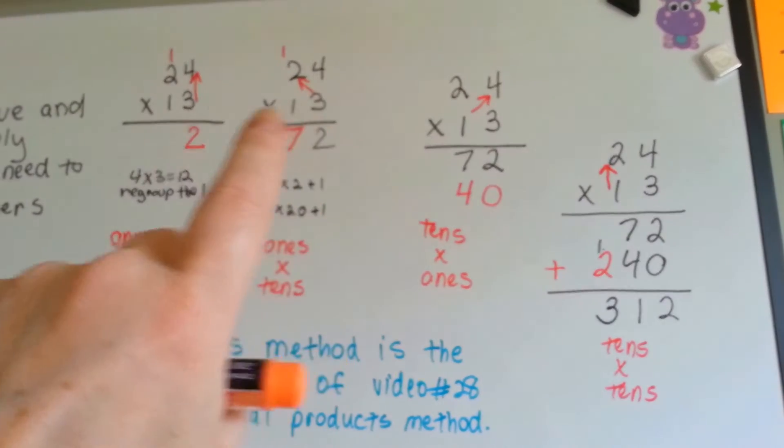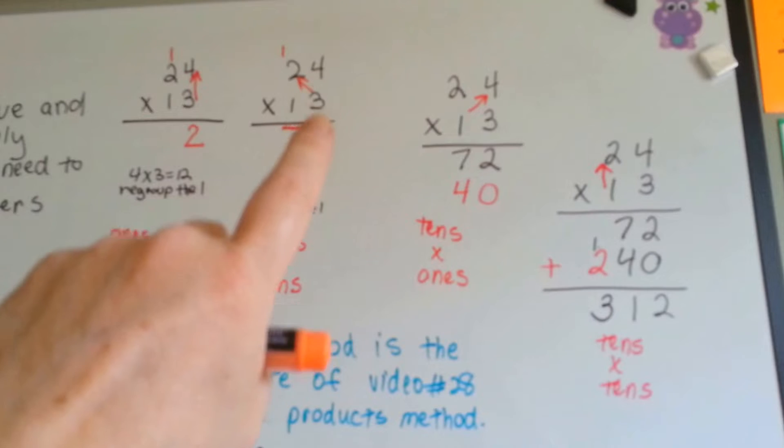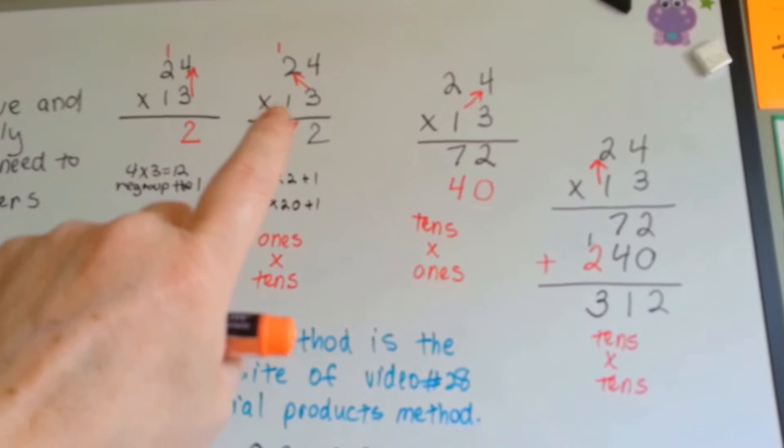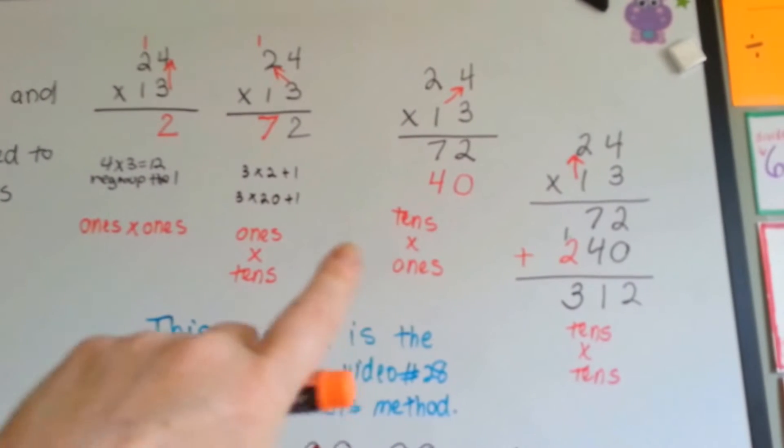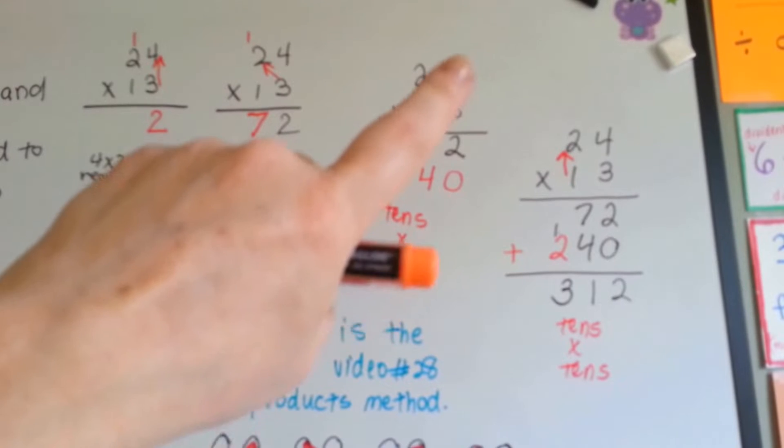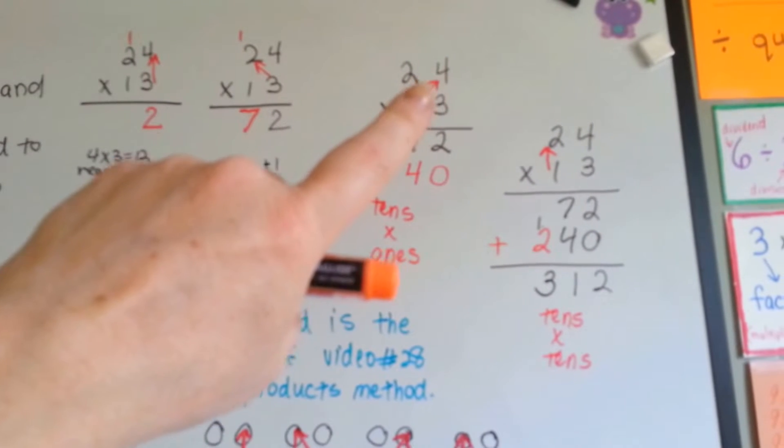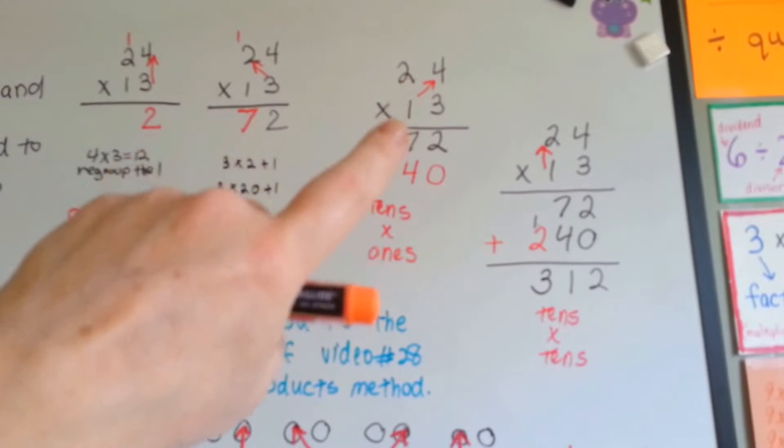Now that the 3 has been multiplied to both the 4 and the 2, it's the ones turn to be multiplied. And it's going to go to the 1, it's going to go to the 4, and then to the 2. See, it's going to take its turn.